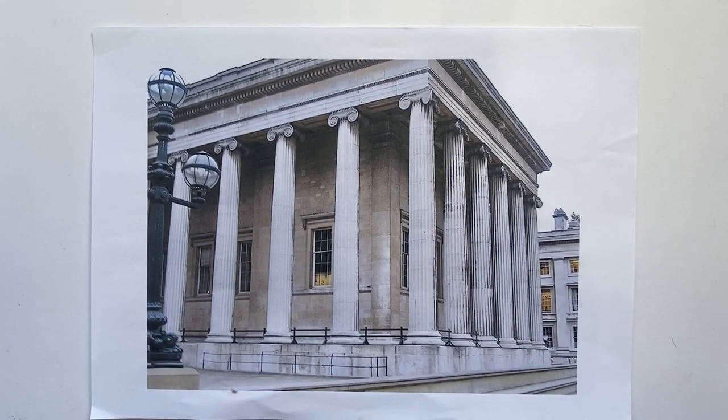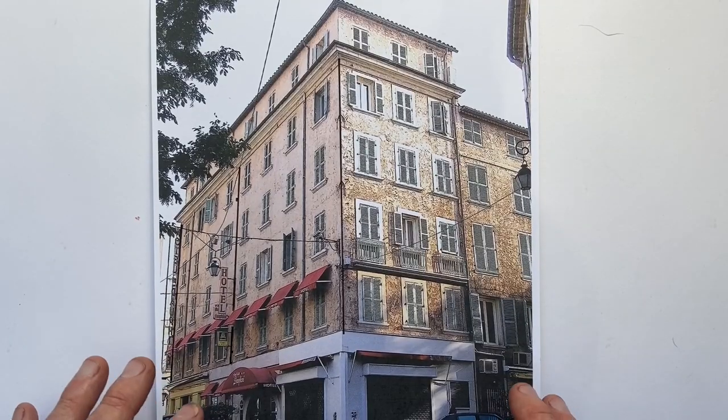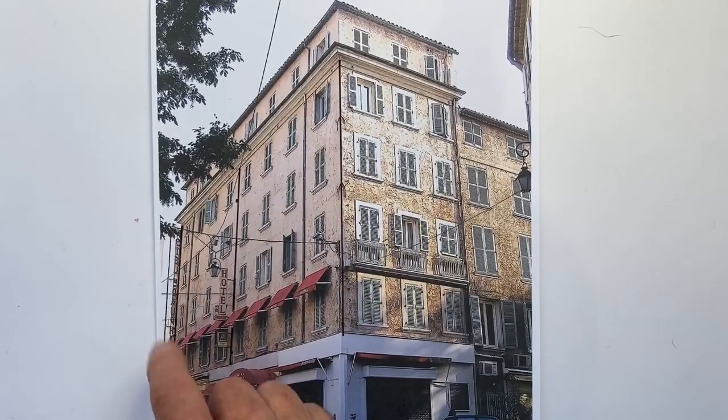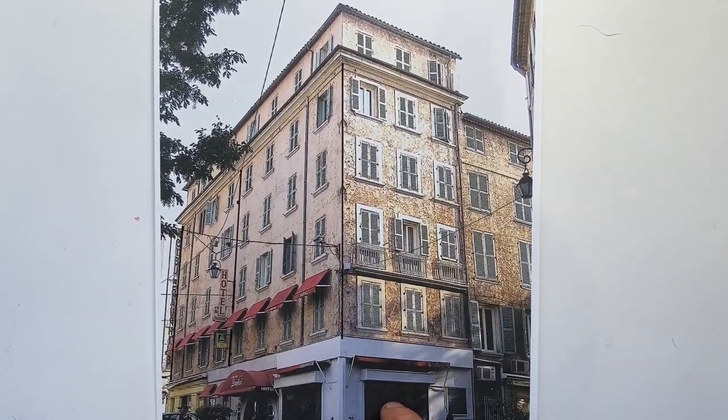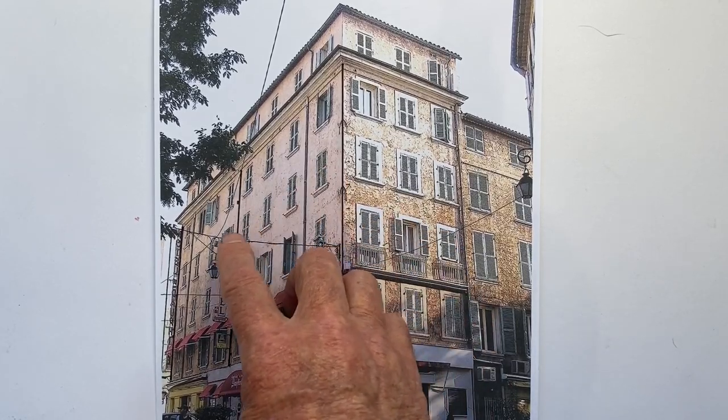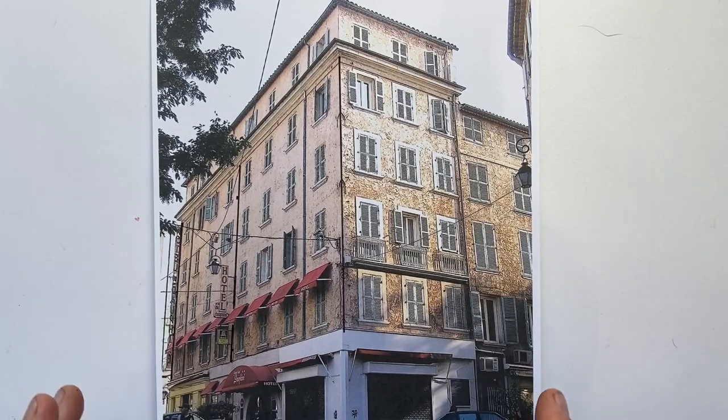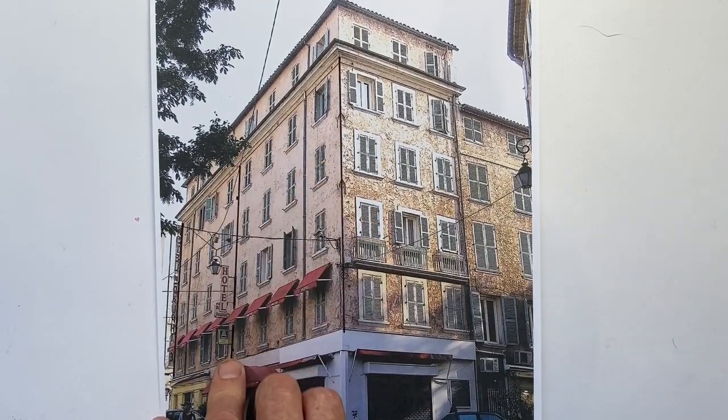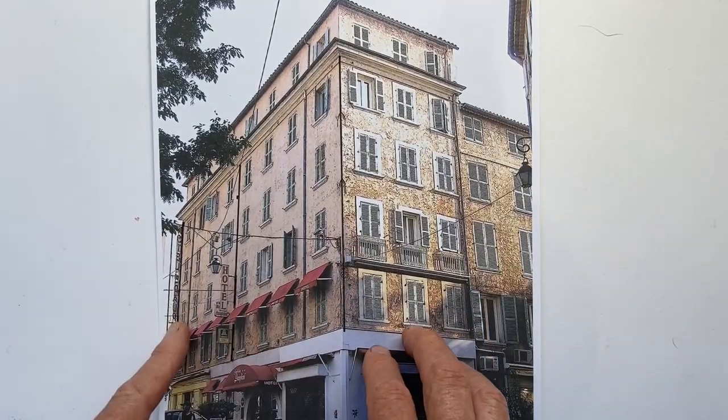It's particularly noticeable when we have windows that are equally spaced. Here we have a hotel in the south of France. Now these windows are all the same size and they're all equally spaced from each other. But if we count the windows 1-2-3-4-5-6-7-8, that tells us that the halfway point is between the fourth and fifth windows.